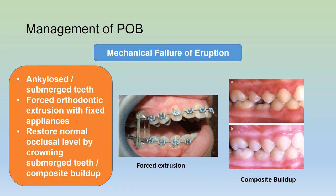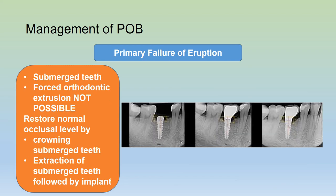For mechanical failure of eruption with ankylosed and submerged teeth, we can use forced extrusion of the teeth using fixed appliances, or restore the normal occlusal level by crowning the submerged teeth or using composite buildup. For primary failure of eruption, orthodontic extrusion is not possible. The normal occlusal level can be restored by either crowning the submerged teeth or extracting the submerged teeth followed by implants.